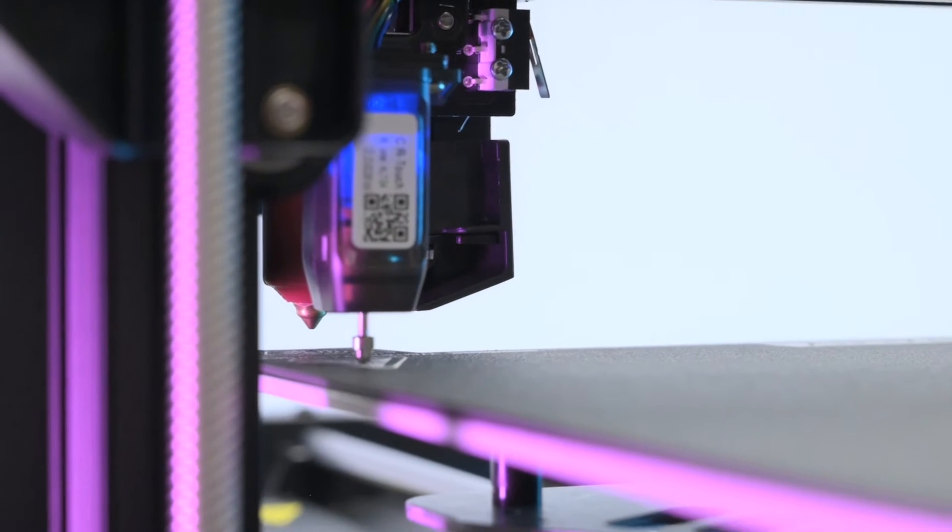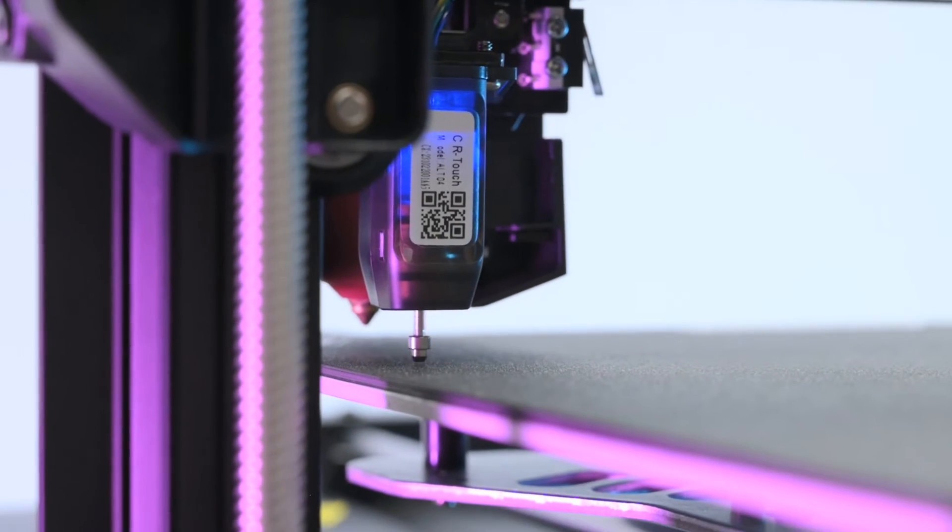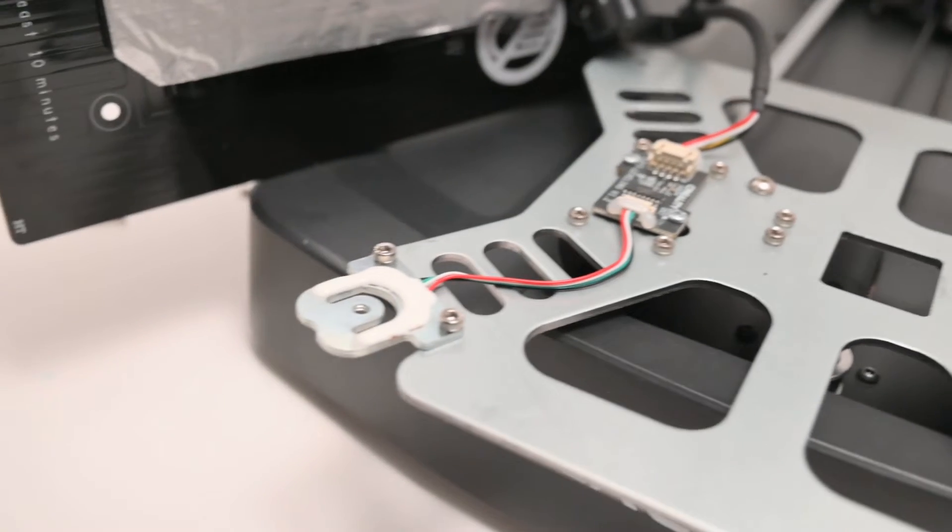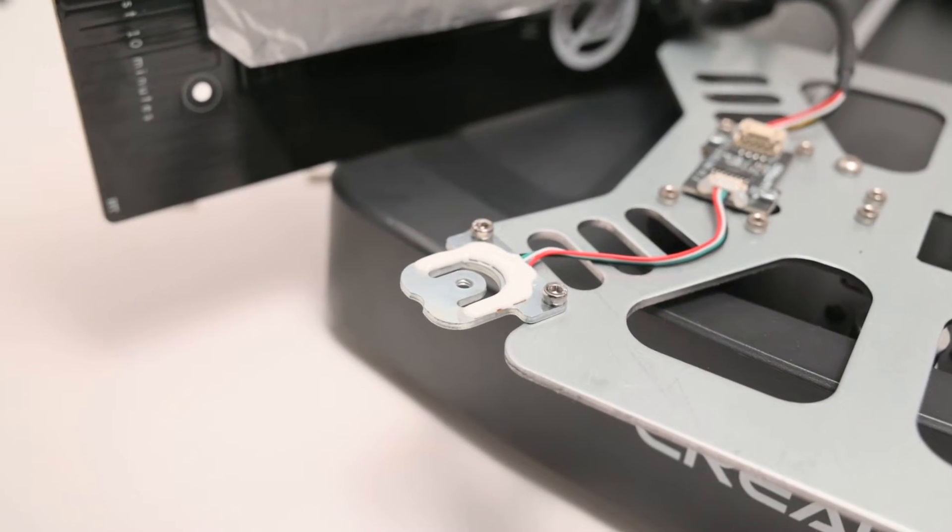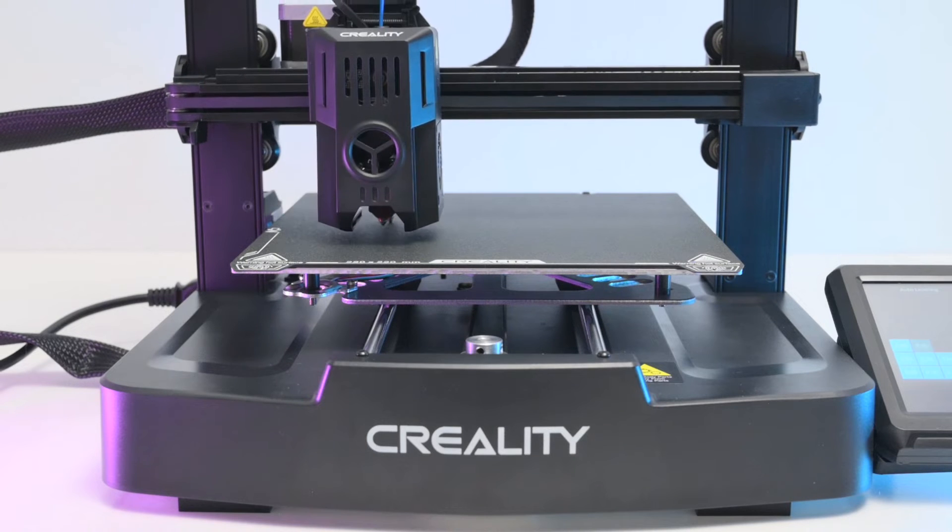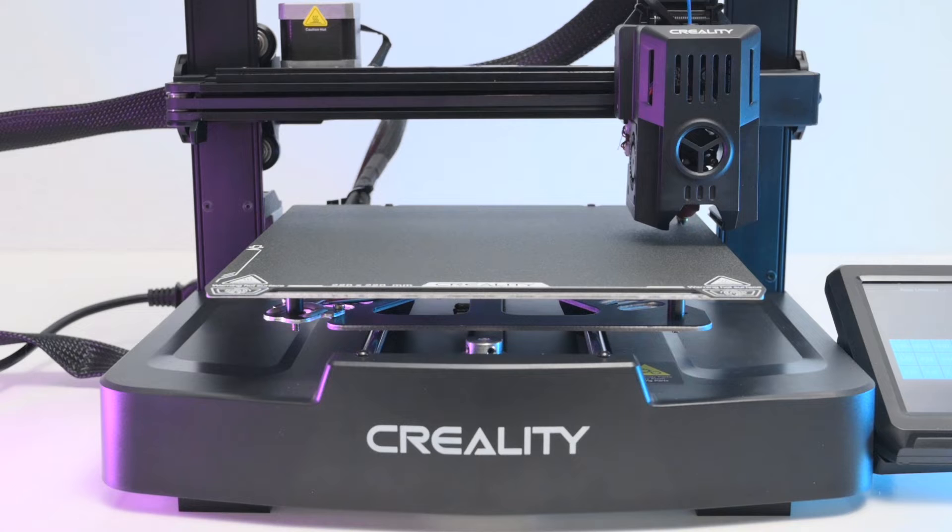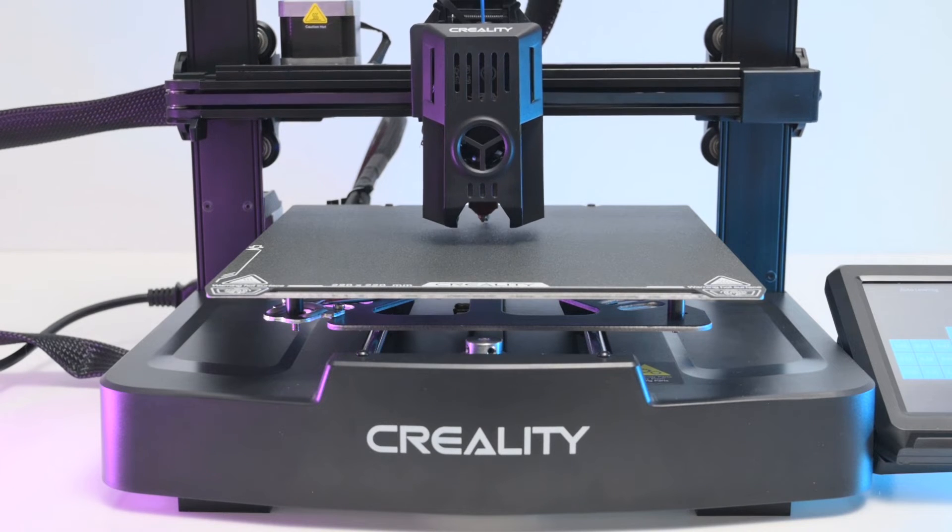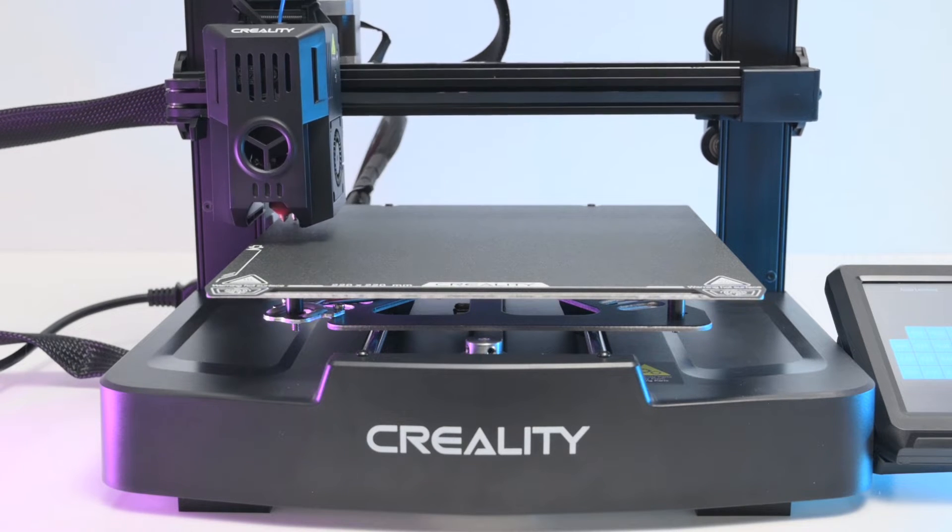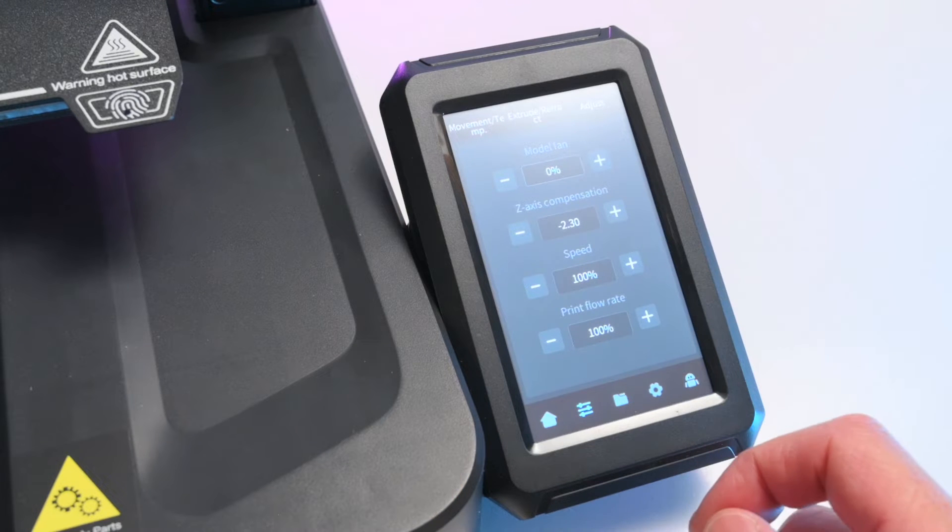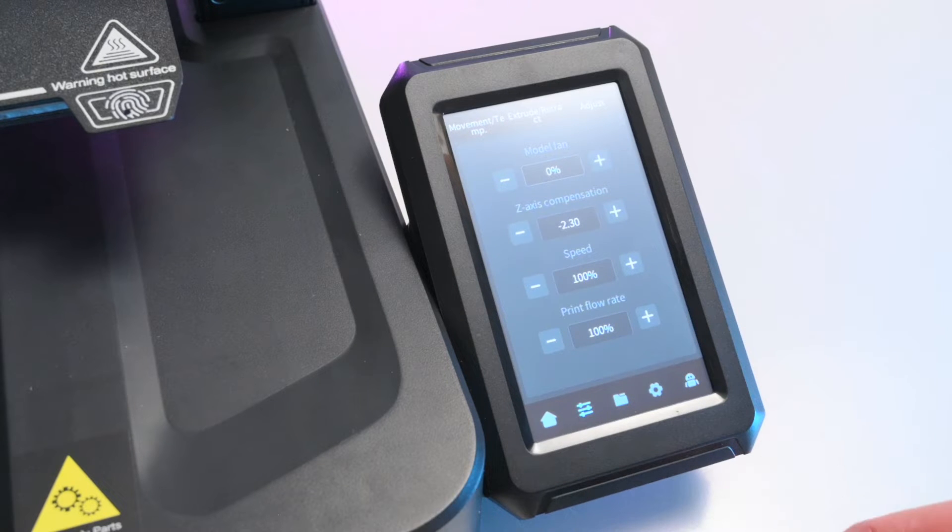Having good levelling is the basis of print quality and the KE features a CR touch sensor for auto levelling and a load sensor in the front left corner for the Auto Z offset. For a beginner this is great as there's no need to turn screws or make adjustments. The bed level is totally hands free and completely taken care of by the machine. The Z offset can still be manually adjusted on the touch screen if needed. It's good to see features like this from higher end printers reaching a budget printer.